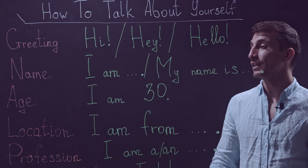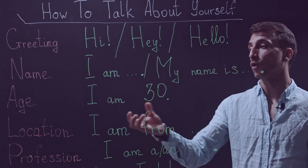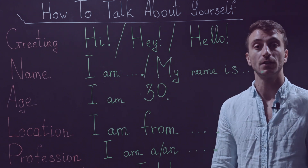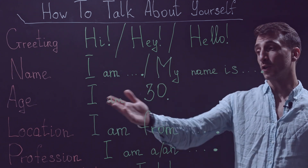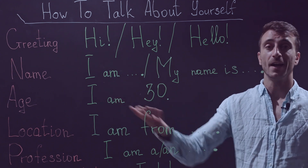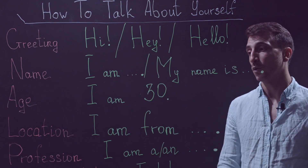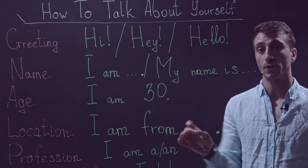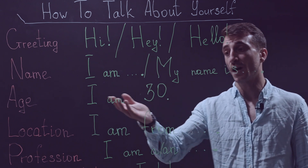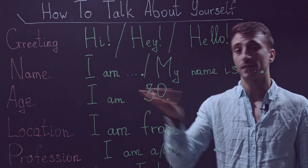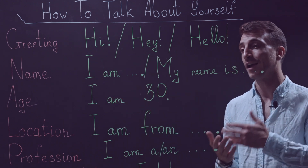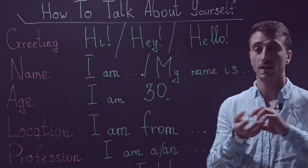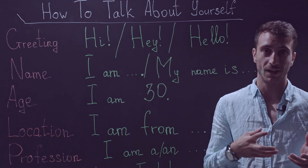Next is your age — telling a person your age. You could say: I am 30. This is very, very important. You cannot say just 'I 30.' You need to say 'I am 30' — 'I am' followed by your actual age.